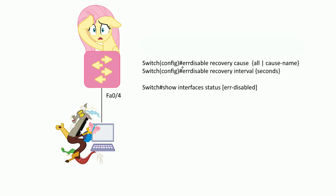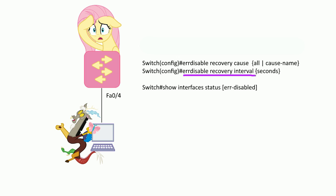We go to global configuration and use the errdisable recovery command, specifying the cause. There are a bunch of different reasons why a port would go down. We're going to specify port-security. You can choose the 'all' parameter, but I wouldn't recommend it. By default, the switch will wait five minutes before it tries to bring the port back up. We're going to adjust that with the errdisable recovery interval command and set it to 30 seconds. There's also a handy show command that displays the status of your interfaces — you can use the errdisable parameter to narrow it down and see all the error-disabled ports and the reasons why.